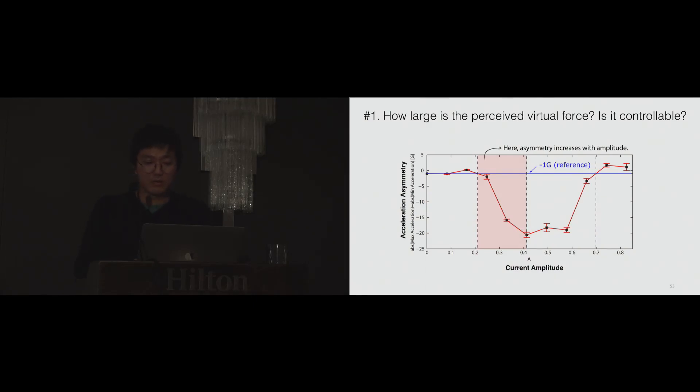To see the effect of the current magnitude, we made another plot with the same data. The x-axis is the magnitude of the current, and the y-axis is the acceleration asymmetry, which is the difference between the absolute values of the maximum and minimum acceleration. We see that the asymmetry only increases within the range between 0.2 and 0.4. So we decided to use the three values in this range for virtual force rendering.